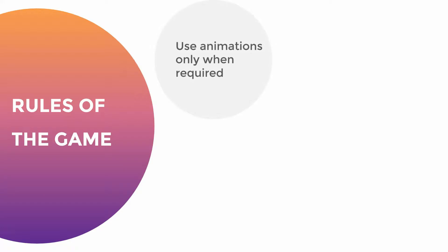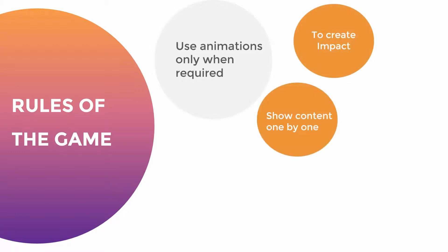How would you know when you require animations? You can use animations to create certain impact in the slide, to show your content one by one. For example, if you have five pointers on your screen and you show all five at once, people will read them before you even start talking. So what you could do is show one point using animation, talk about it, then come to the second point, show it through animation, talk about it, and so on and so forth.